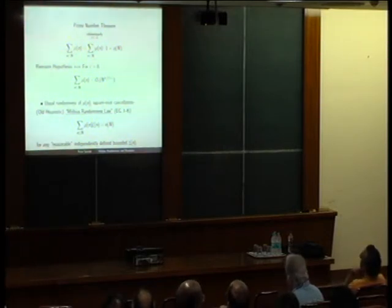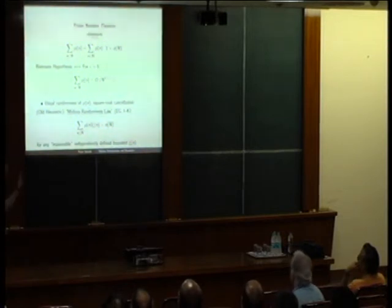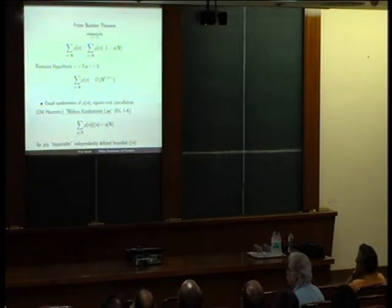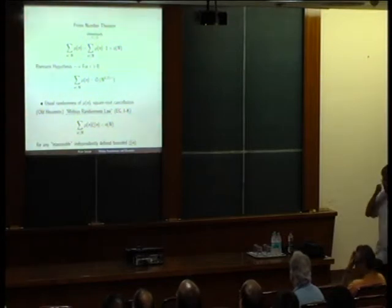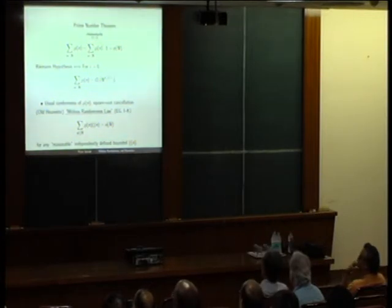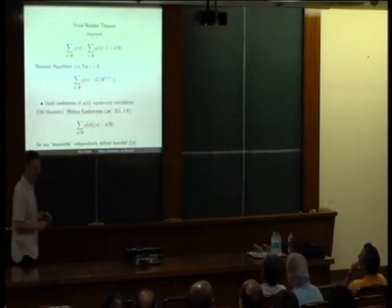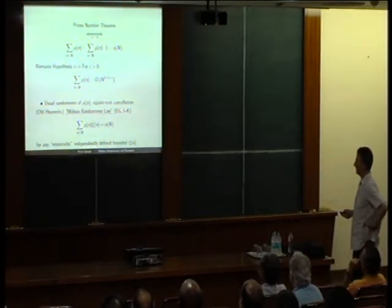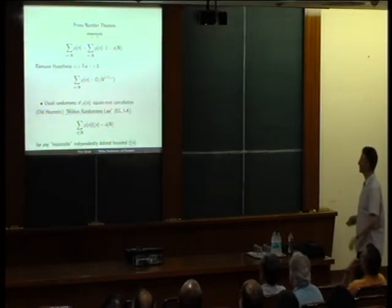The fact that this sum is smaller than the trivial bound — that it goes to zero — is the prime number theorem. The famous Riemann hypothesis is equivalent to the statement that you have square-root cancellation in that sum, which is what you would expect if the mu(n) were random. This talk is not about the Riemann hypothesis, and this is not an approach to it — it's just an equivalence. If you think you're going to estimate this series and prove Riemann, you're in for a rough time. It is, however, a way of formulating the Riemann hypothesis for someone who has never heard of the Riemann zeta function.